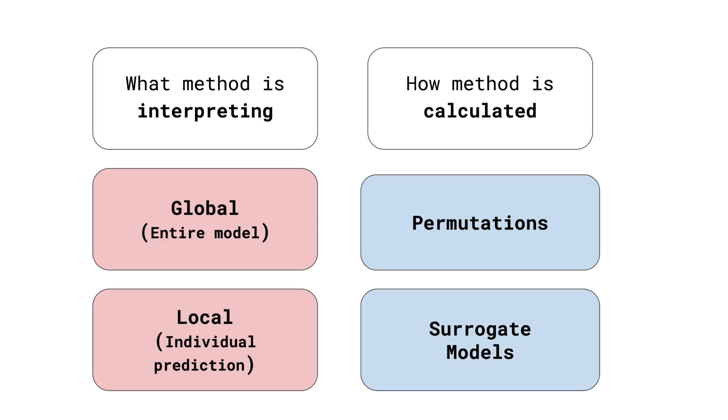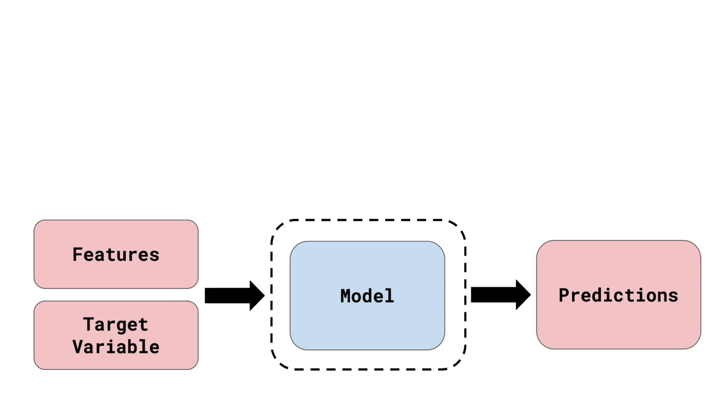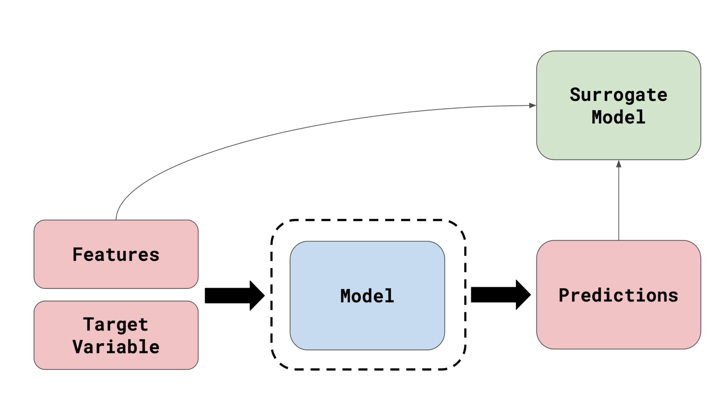Another approach is to use surrogate models. Here, a black box model is first trained and used to make predictions. A surrogate model is then trained on the black box model's predictions instead of the target variable. The surrogate model must be intrinsically interpretable so it can be interpreted directly. If we train a model on all the black box model predictions, it is known as a global surrogate model. In comparison, local surrogate models are trained to interpret individual predictions. LIME is a good example of such a method.